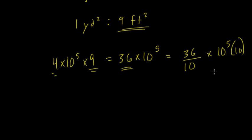We don't want to change the value of the number. We divide and multiply it by 10. So our first answer would be 3.6 times 10 to the 6th, because we have 5 tens here, 1 more, and 6 altogether.